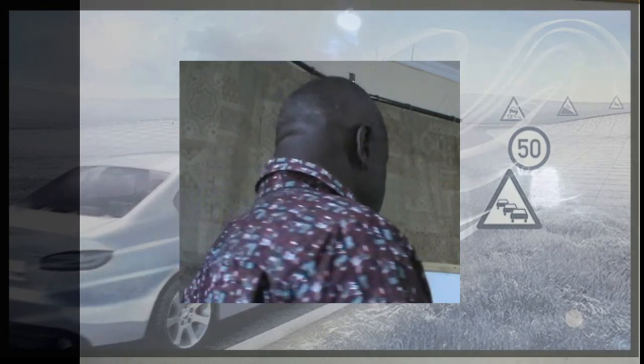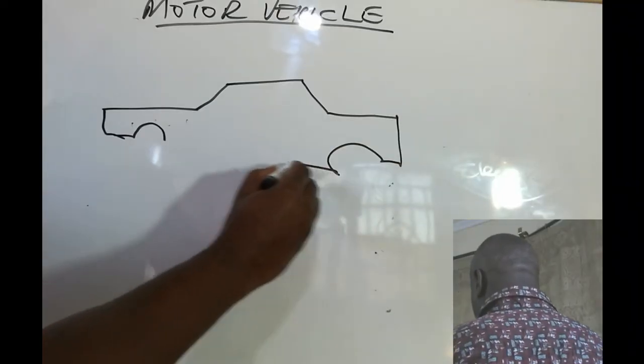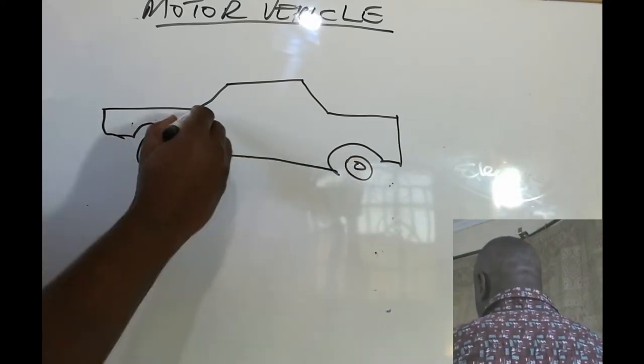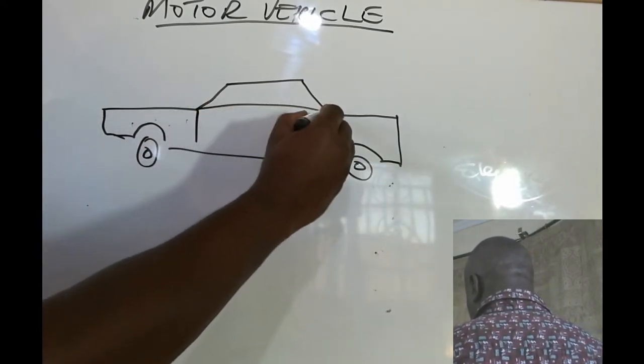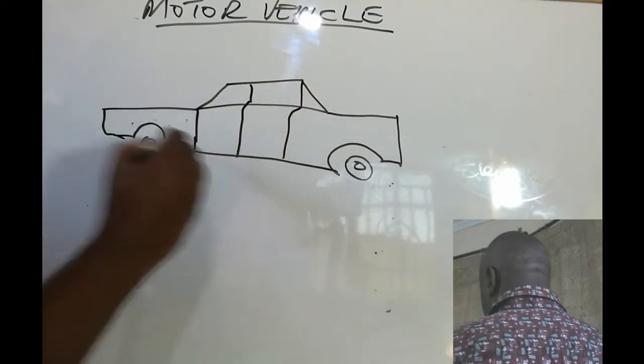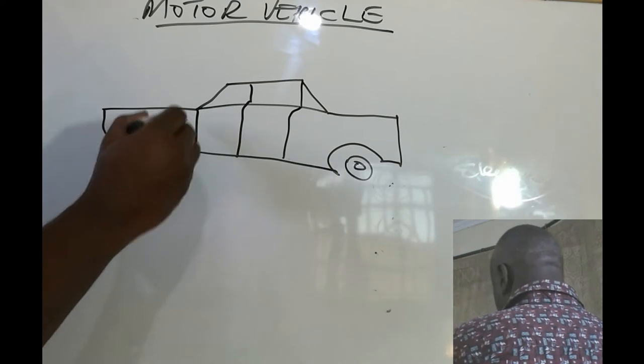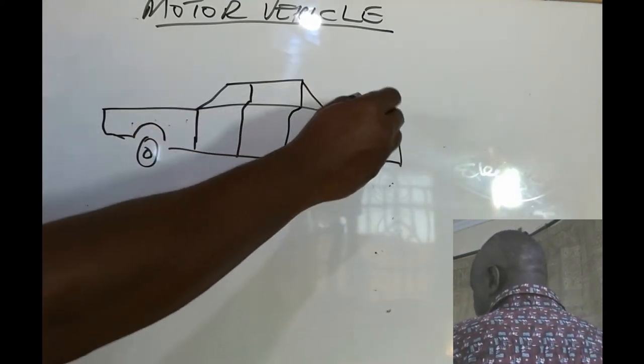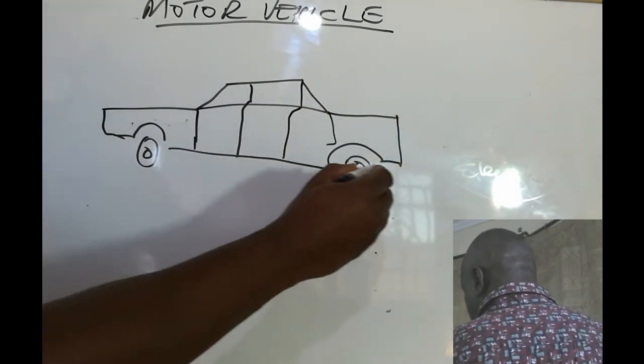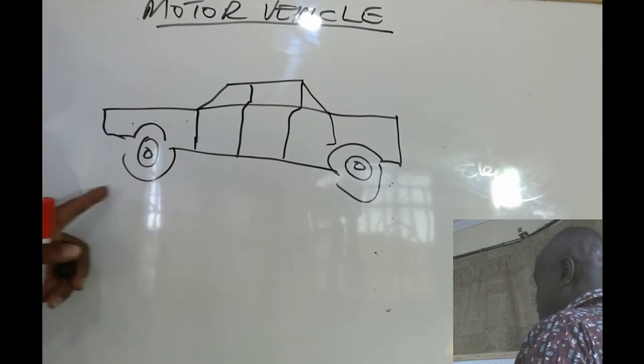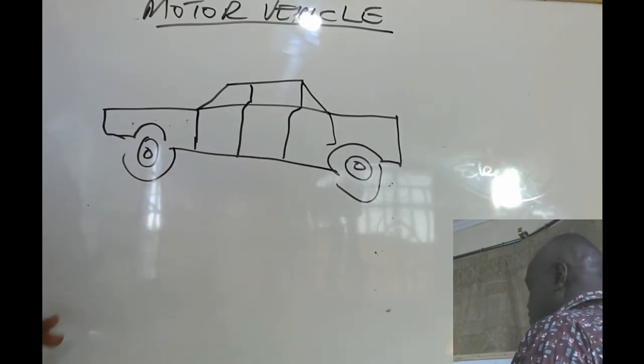So basically this is how a motor vehicle looks like. This is a simple illustration of a car, a small car for that matter. We have the front part, we have the middle part and we have the back part. So here we have wheels and this is a simple layout of a car.